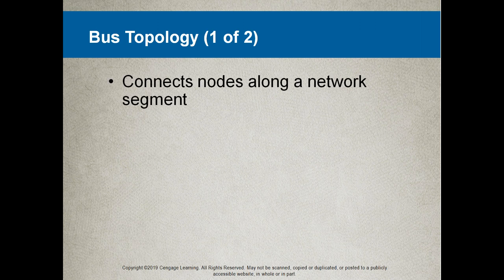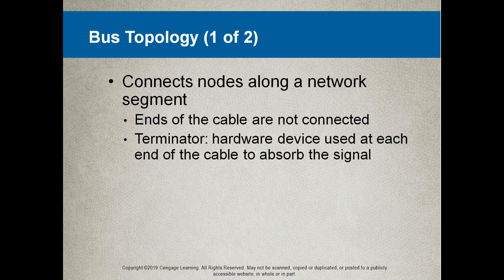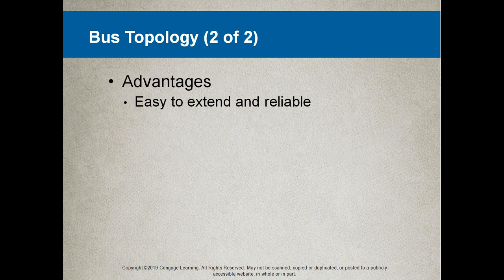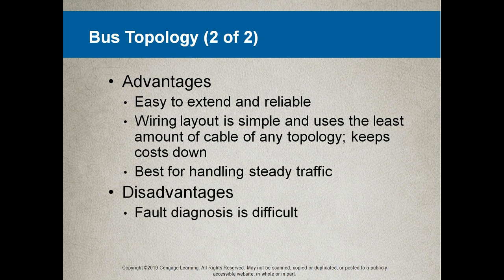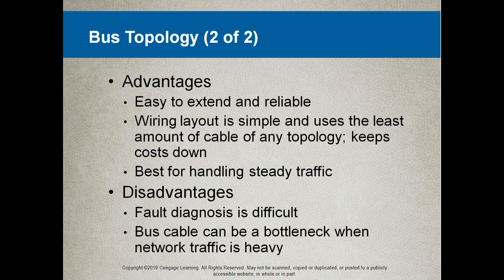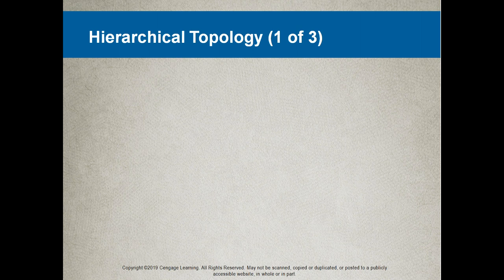The bus topology connects nodes along a network segment. The ends of the cable are not connected — a terminator is a hardware device used at each end to absorb the signal. Advantages: it's easy to extend and reliable, the wiring layout is simple, it uses the least amount of cable of any topology, keeps costs down, and is best for handling steady traffic. Disadvantages: fault diagnosis is difficult and the bus cable can be a bottleneck when network traffic is heavy.